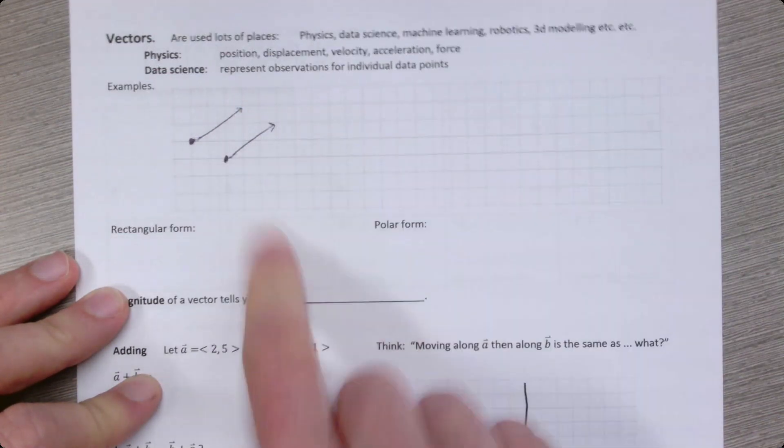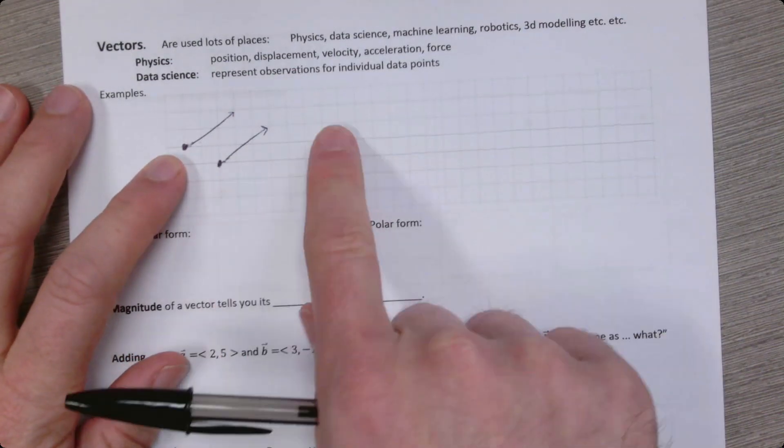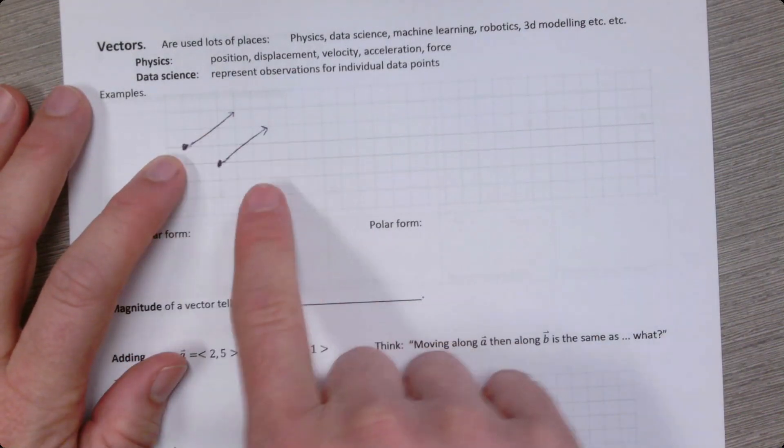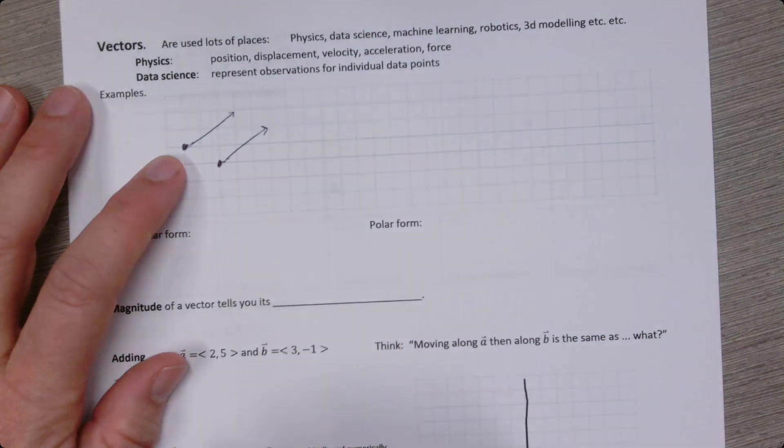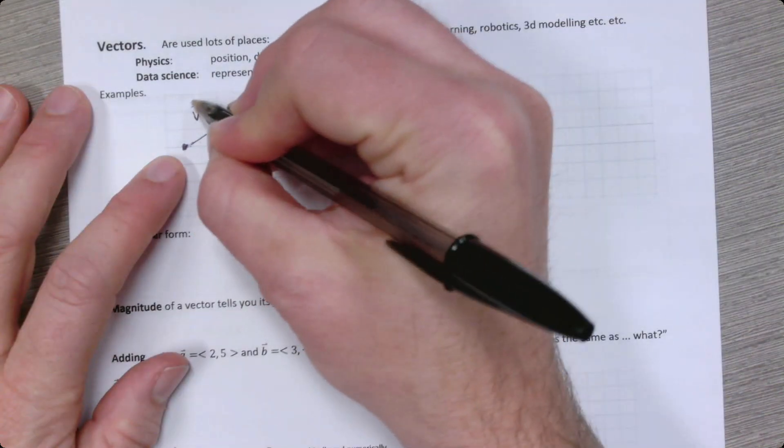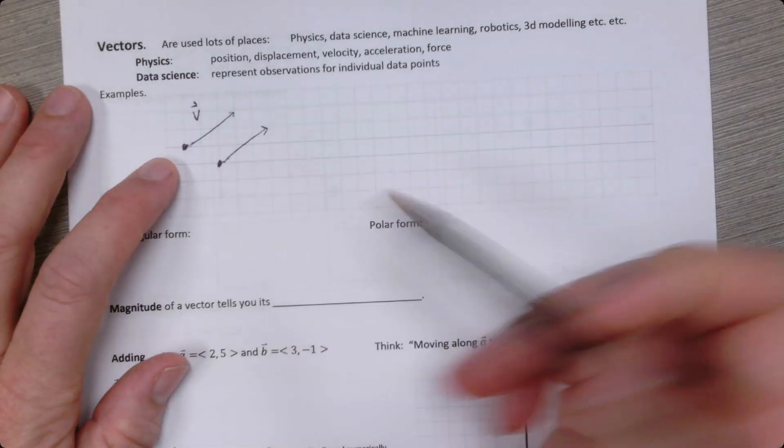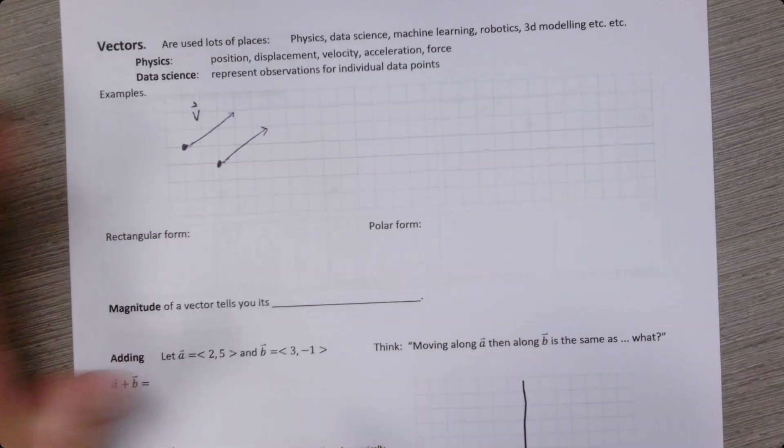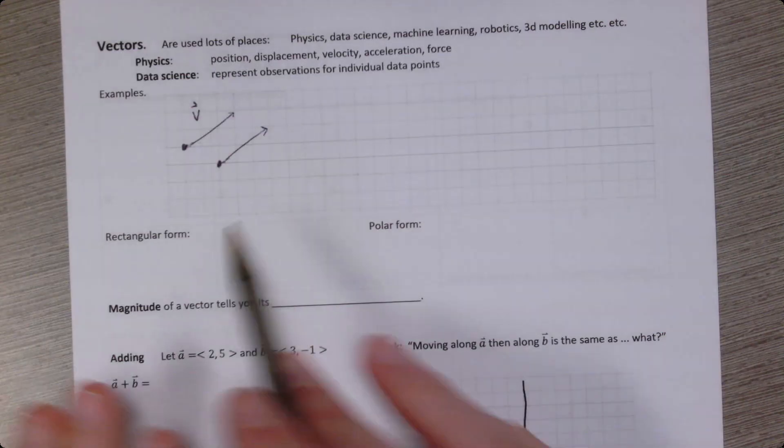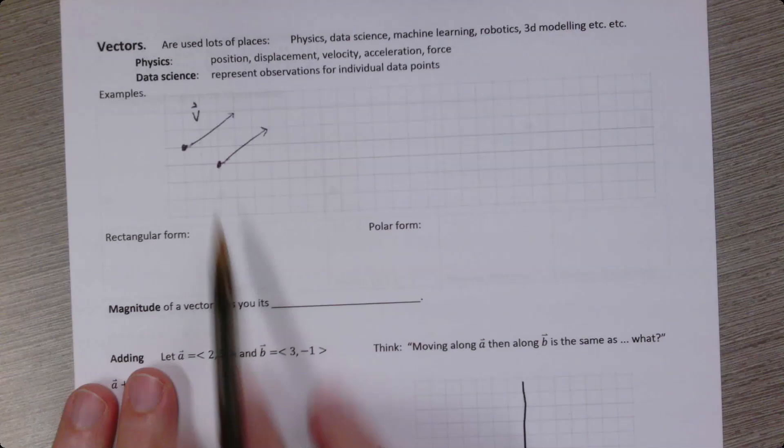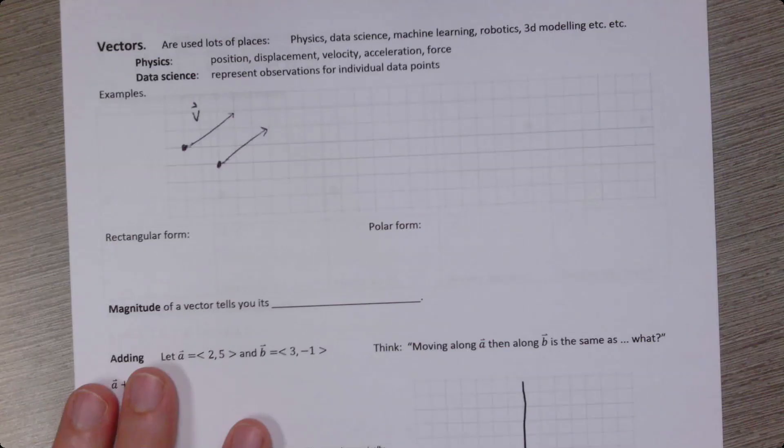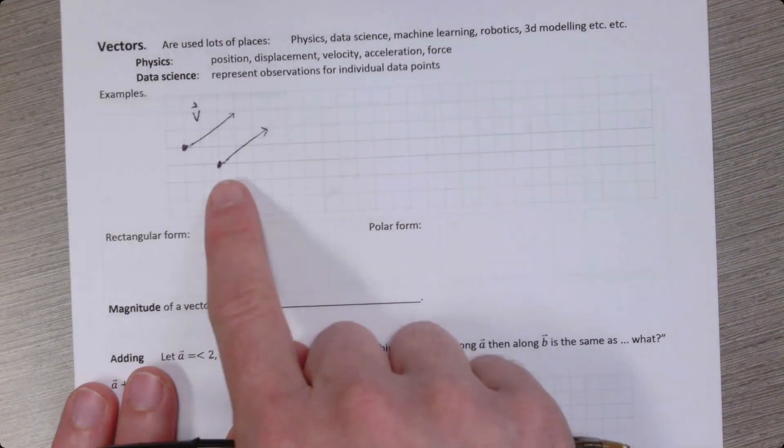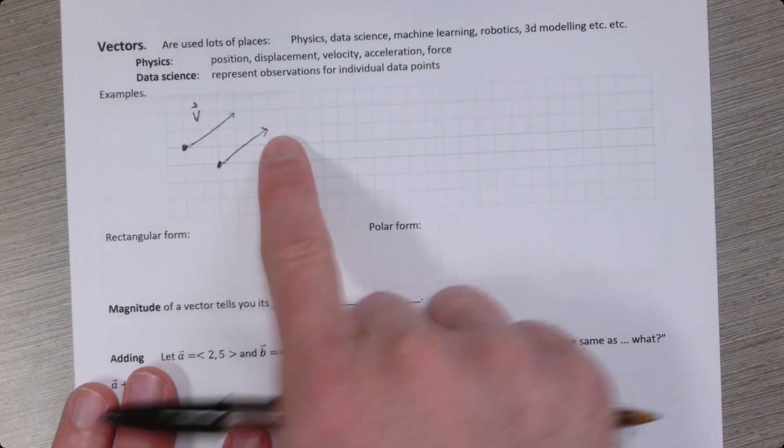And so I'm notating it this way. So you can tell that these arrows are pointed in the same direction, because they have the same angle, and they're the same length. And so we would call these the same vector, even though they're located in two different places on the plane. So that's the first thing to know about vectors, is they don't have a particular place that they live. They're not centered anywhere. Instead, they're defined by their starting and their ending points.